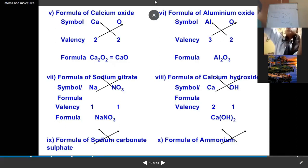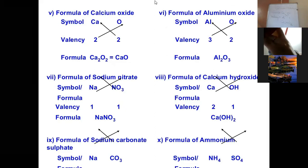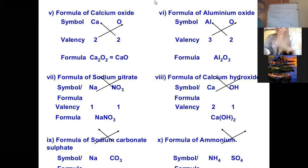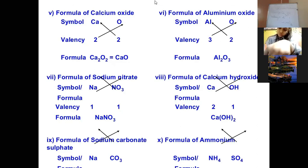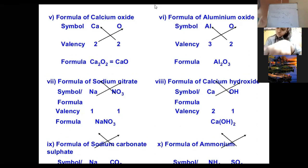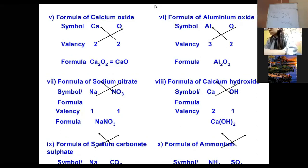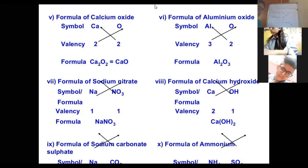Now write down the formula of aluminium phosphate as an exercise. Also, please refer to NCERT table number 3.6 — you need to learn all the valencies listed in that table by heart.